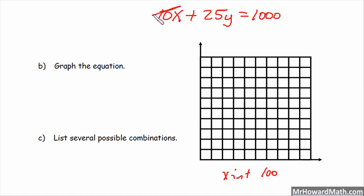To find the Y intercept, we cover X up and solve. So we would divide by 25 here. So that would be 1,000 divided by 25, which is 40. So the Y intercept is 40. So we have our two intercepts. We have a 10 by 10 grid here, so we'll let each box be 10.